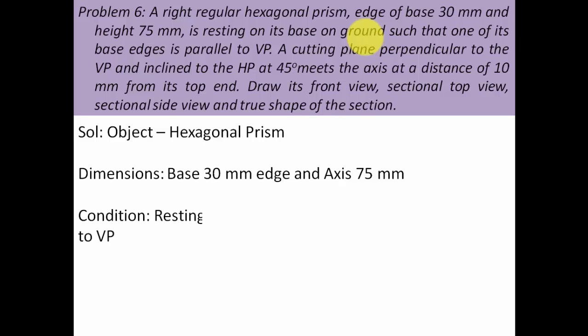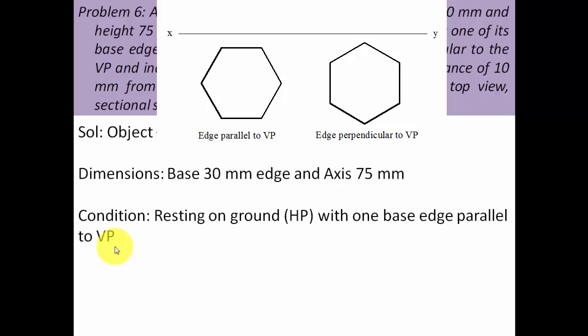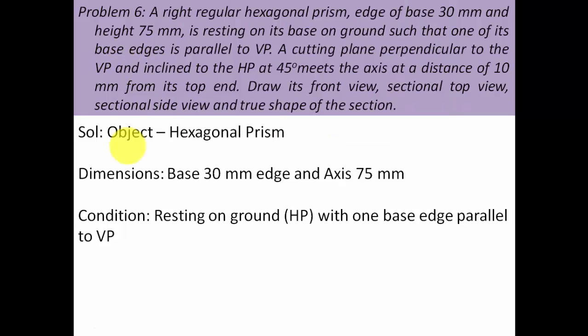Resting on ground means horizontal plane, with one base edge parallel to the VP — this should reflect in your drawing. When you think of a hexagonal prism resting with its base on HP, the true shape of the base can only be seen in the top view. So you begin by making the top view, which will be a horizontal hexagon, because one base edge is parallel to the VP.